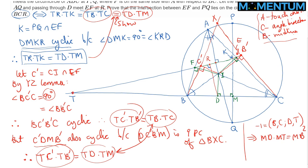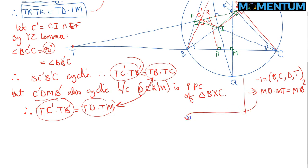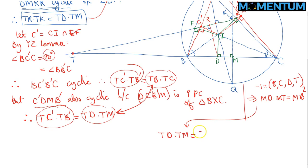And now you can confirm that TD times TM is indeed equal to TB times TC by just observing some length relationships. Let me do it here. TD times TM, I can keep the TM and rewrite TD as TM minus MD. But that's just TM squared minus TM times MD. But we have observed earlier that TM times MD is equal to MB squared, simply because of this harmonic bundle.